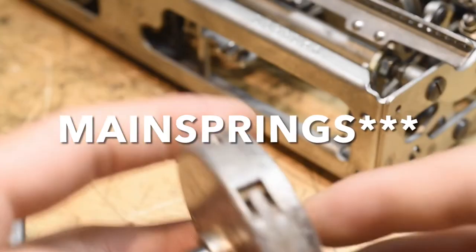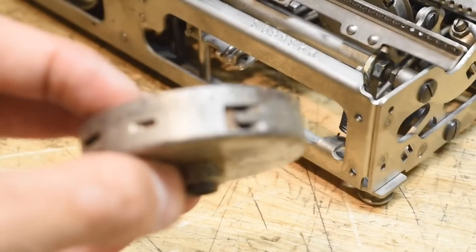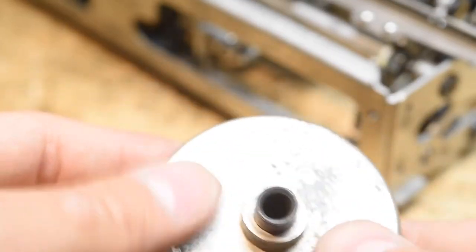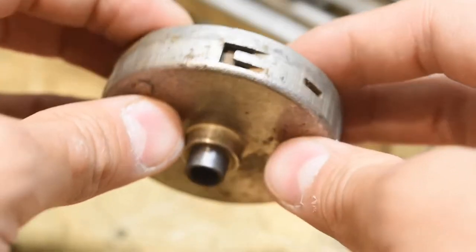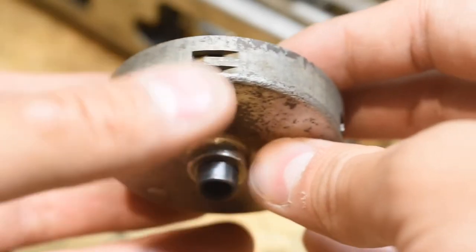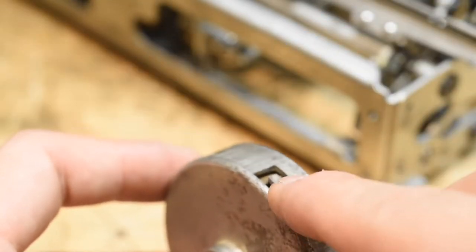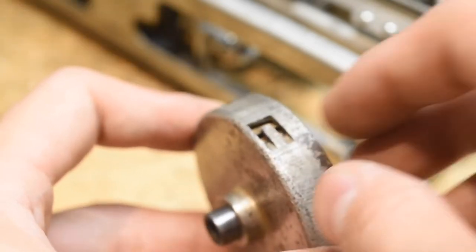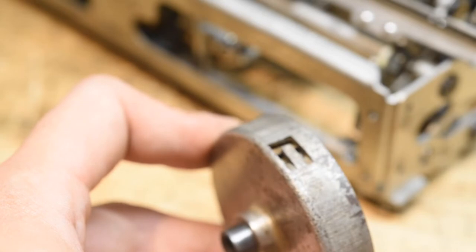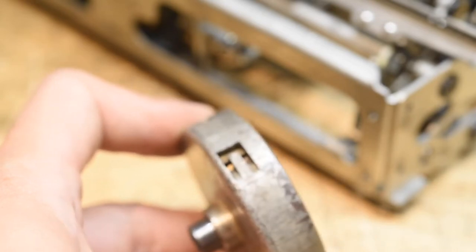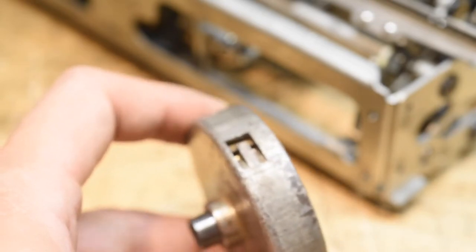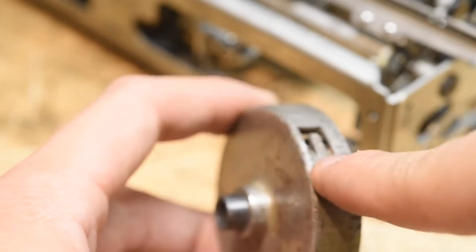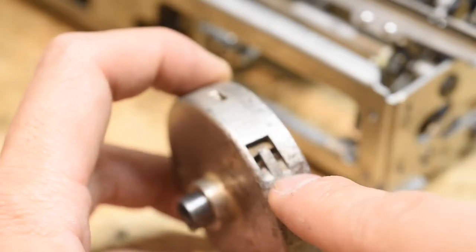I want to take a look at two other draw bands really quick, two common styles that you'll come across. This one's off of Hammond, but it's very common on Royals and Underwoods, and a lot of desktop typewriters. You'll actually have a tab cut into the side of the drum there, and you will either have a metal piece that loops over that tab, or you will be tying a loop in the end of your draw band, and you'll slip that little loop over the tab.